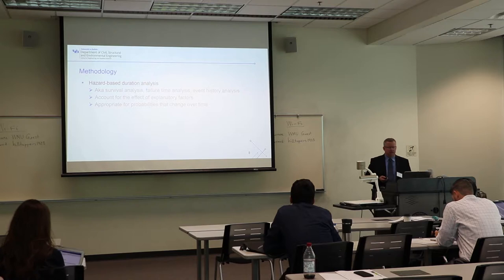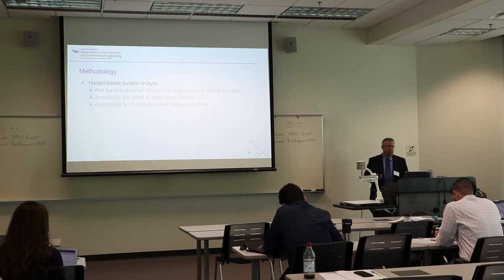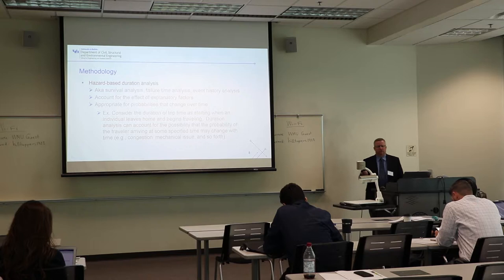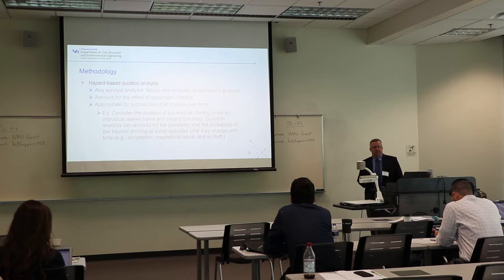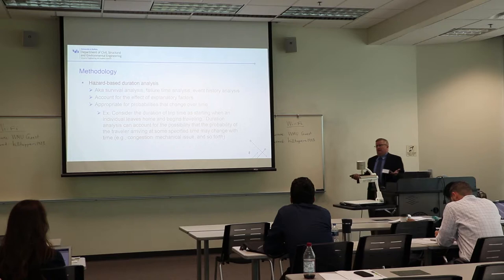Hazard-based analysis is appropriate when you have probabilities that change over time. For example, consider somebody leaving their house to go somewhere for an activity. The duration of trip time starts when the person leaves home and begins traveling. Duration analysis accounts for the possibility that the probability of the traveler arriving at some specified point in time changes — due to congestion, traffic accidents, mechanical issues, and so forth.